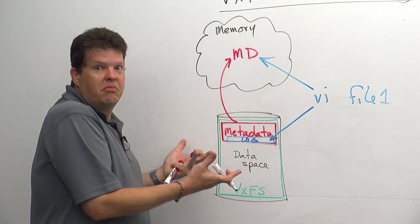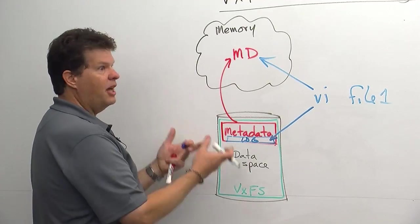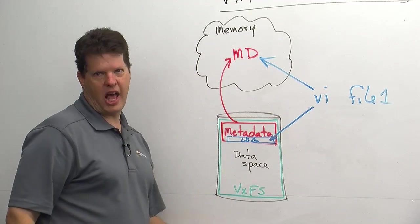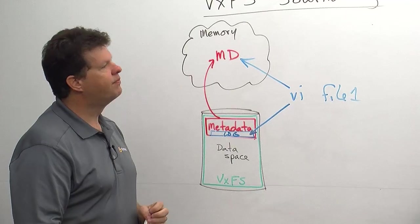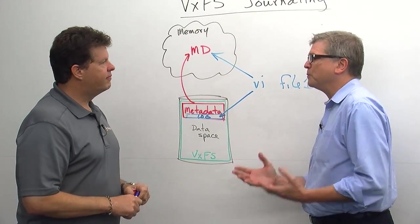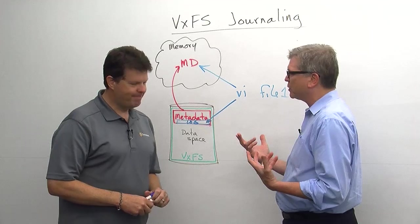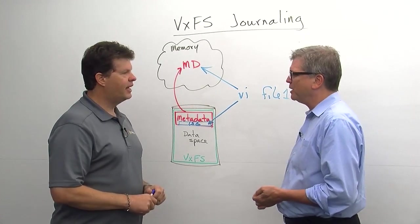So we're essentially eliminating the FSCK scans that would have to be performed in a standard Unix file system. So it appears like nothing's being run. It just comes up. It crashed, it mounts, we're done. Super fast. And that's one of the big things about journaling that allows customers to be able to come up very, very quickly in the event of a crash because of that log. Absolutely.